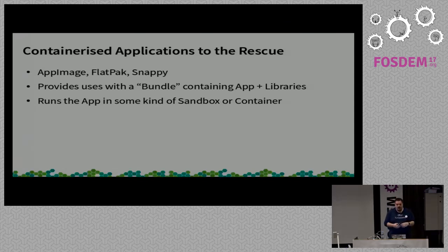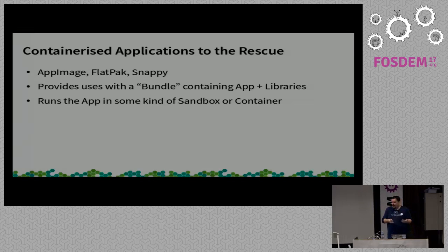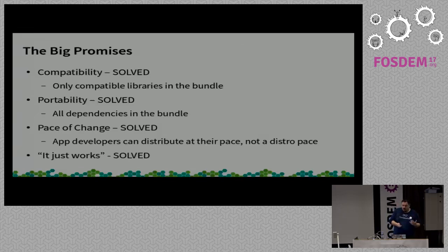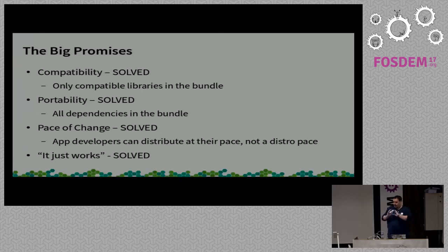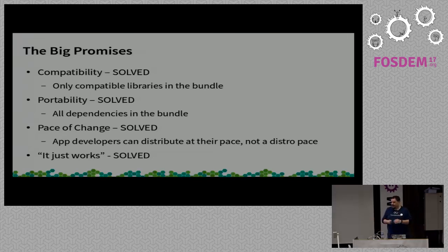Generally speaking, they produce a bundle — be it a tarball or some other way of packaging things up — containing an application and all the dependencies, all of the libraries that it requires. And then they run it in some kind of container or chroot or sandbox. And they make huge promises. These are all ripped straight from their websites, straight from their documentation. All the compatibility problems are solved — you just put everything in there, everything's going to work fine. The portability problems are solved — you just put everything there, you can run it on every distribution. Pace of change: you're the one doing it, you're the upstream source, you do your AppImage or Flatpak, and everything just works.